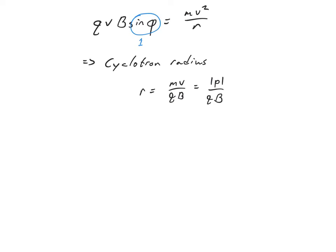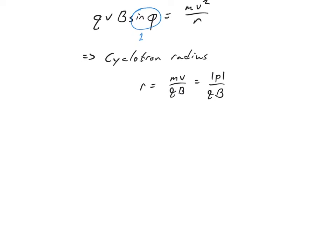Something else I might want to know might be the period of orbit if the particle is just orbiting around in that magnetic field. To do that, I'm probably going to solve that expression for the speed v.